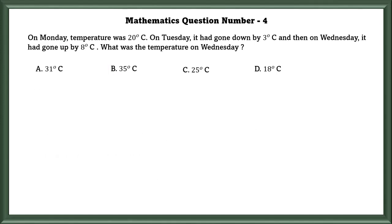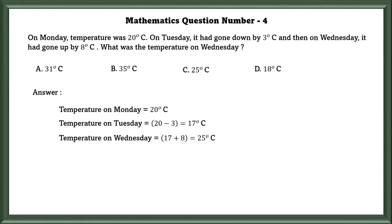Mathematics Question Number 4: On Monday, the temperature was 20 degrees Celsius. On Tuesday, it had gone down by 3 degrees Celsius. So on Tuesday it will be 17 degrees Celsius. And on Wednesday, it had gone up by 8 degrees Celsius. What was the temperature on Wednesday? So it was 17 degrees Celsius on Tuesday. On Wednesday it had gone up by 8 degrees. So 17 plus 8, which is equal to 25 degrees Celsius.